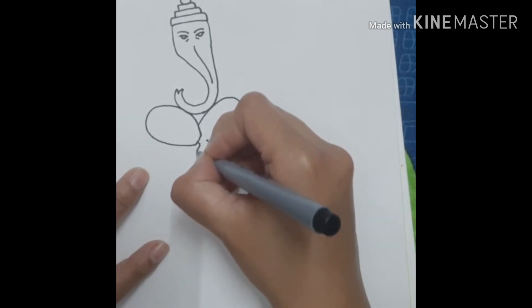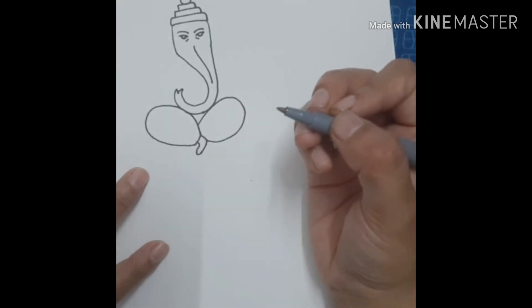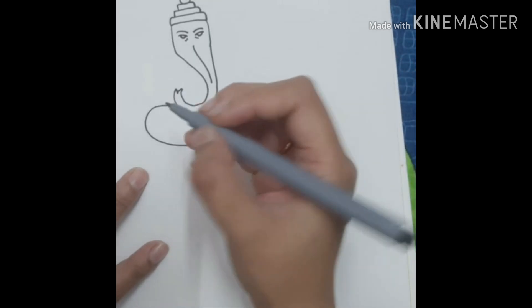Here we will make a small, simple foot. The other leg is not visible because it is in sitting position.